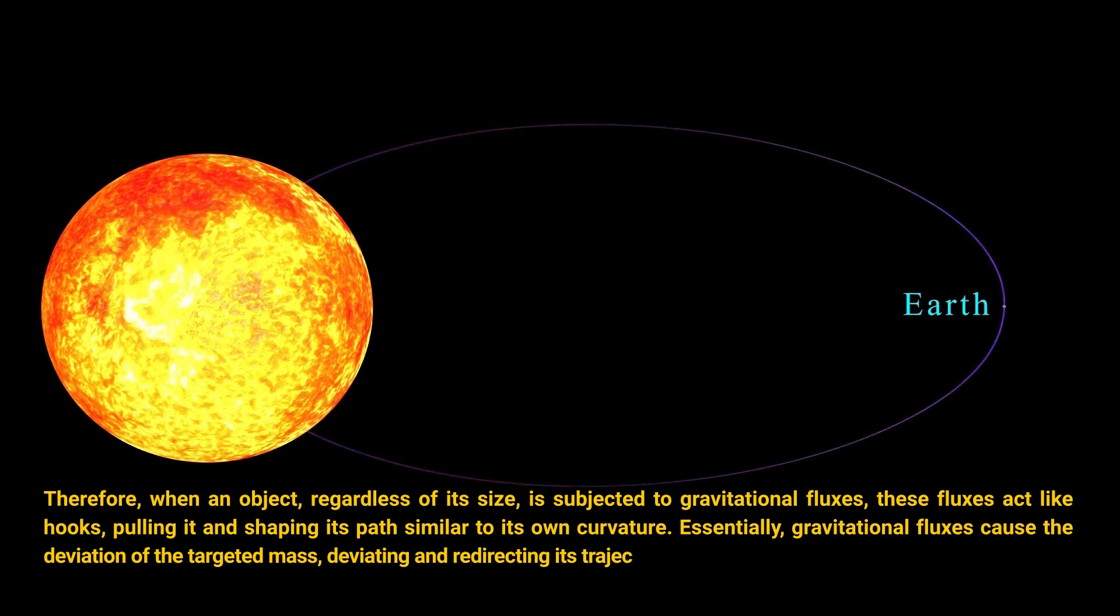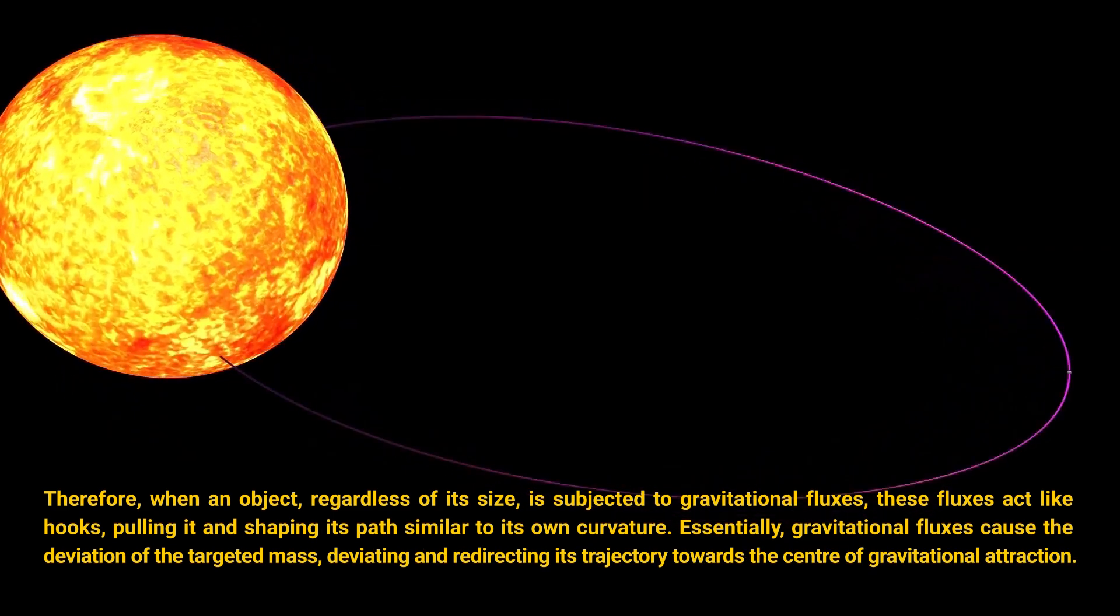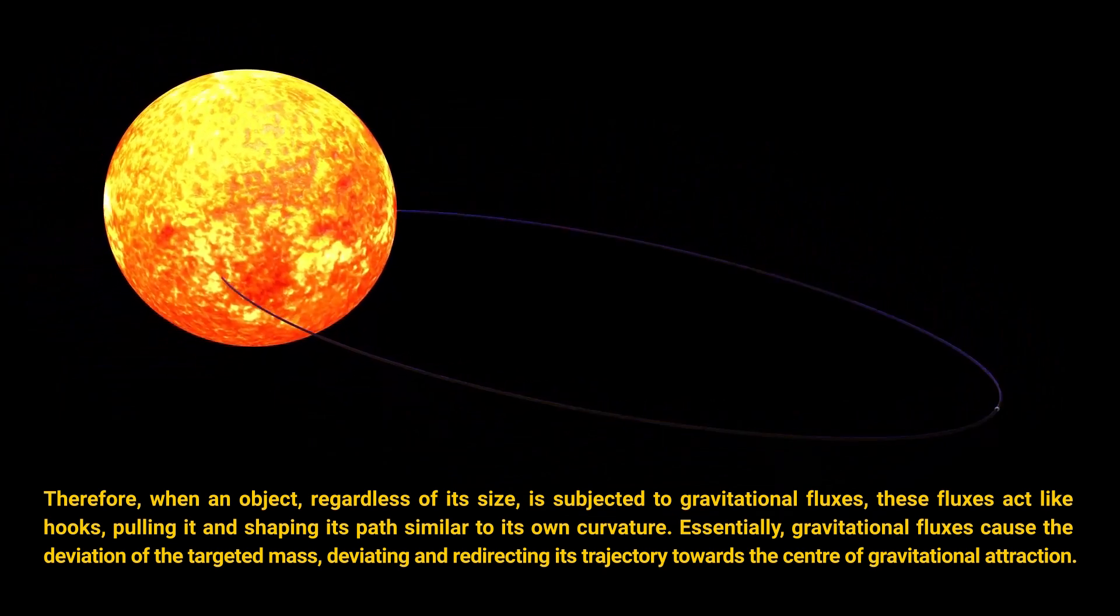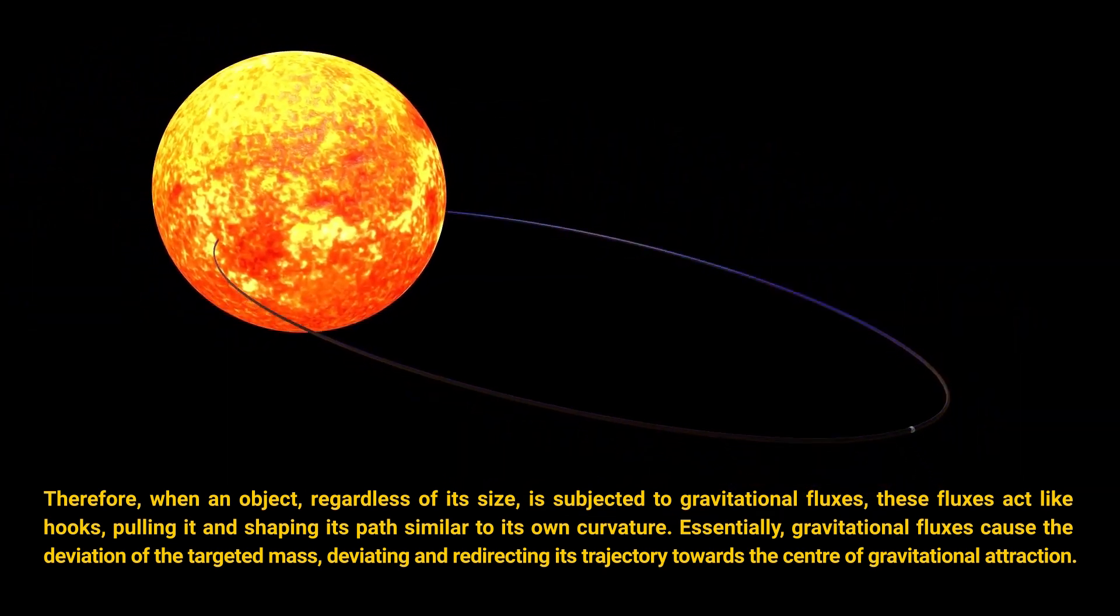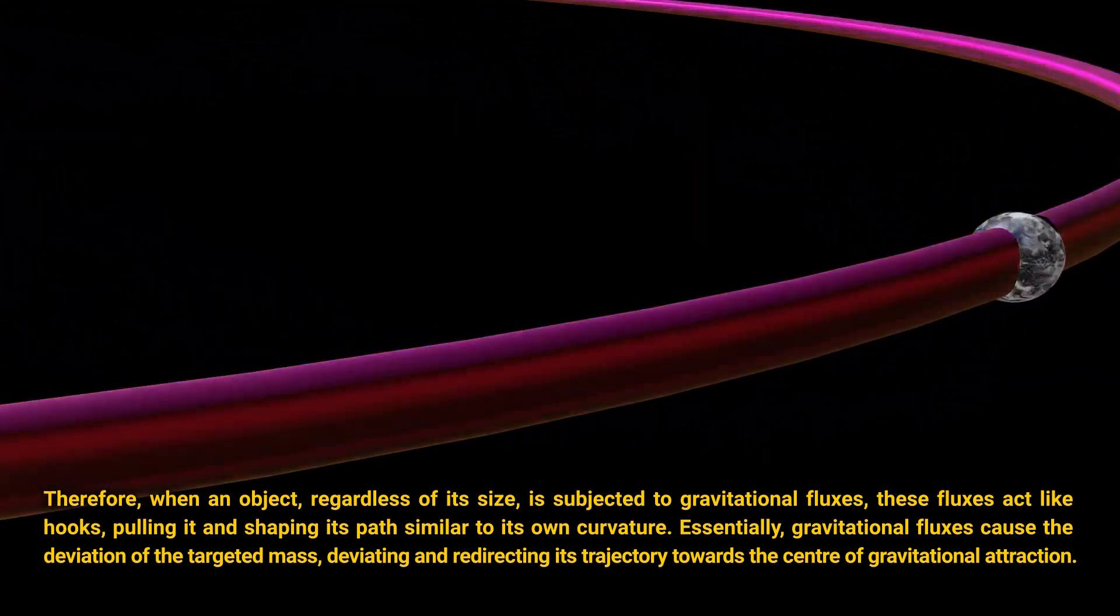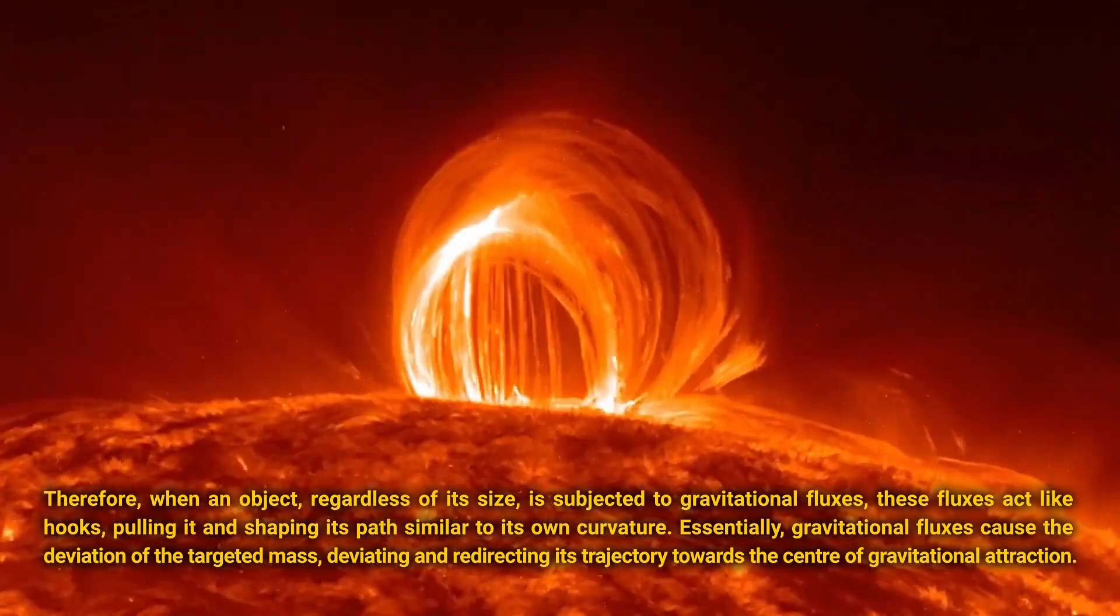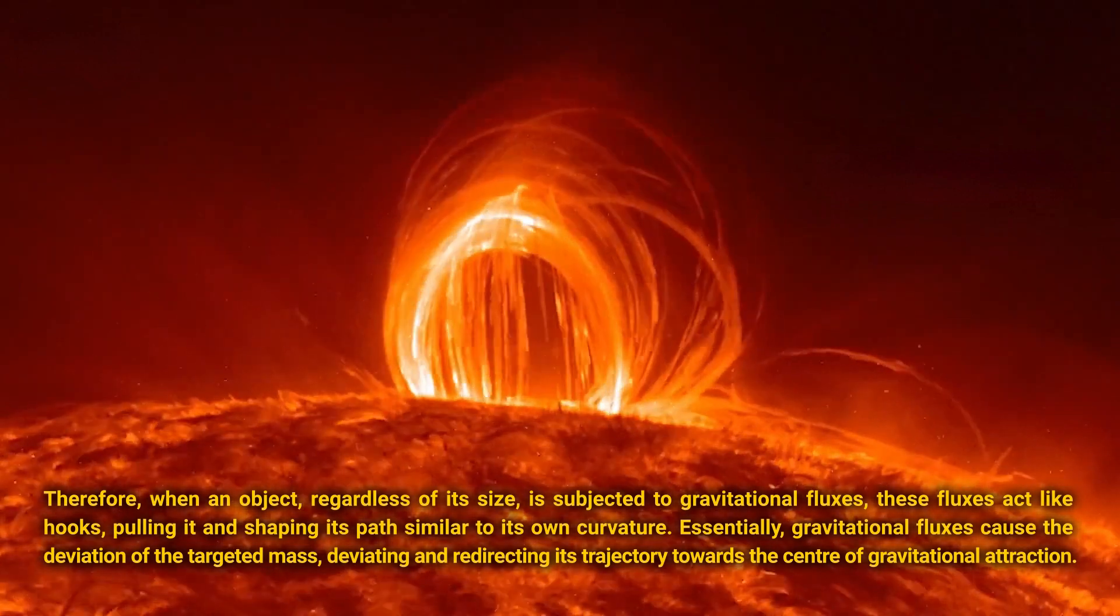Therefore, when an object, regardless of its size, is subjected to gravitational fluxes, these fluxes act like hooks, pulling it and shaping its paths similar to its own curvature. Essentially, gravitational fluxes cause the deviation of the targeted mass, deviating and redirecting its trajectory towards the center of the gravitational attraction.